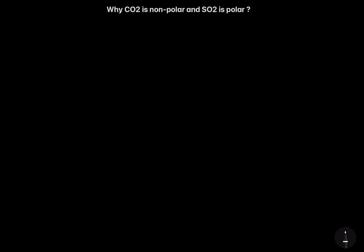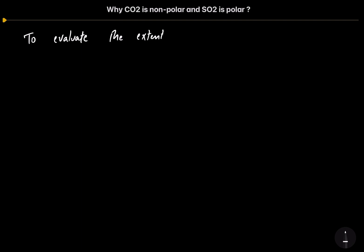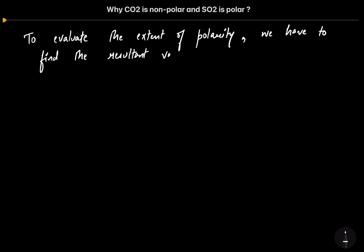To evaluate the extent of polarity, we usually add the vectors according to their directions. That means we have to evaluate the resultant vector — the resultant of all the vectors, or we can say dipoles, present in the molecule.